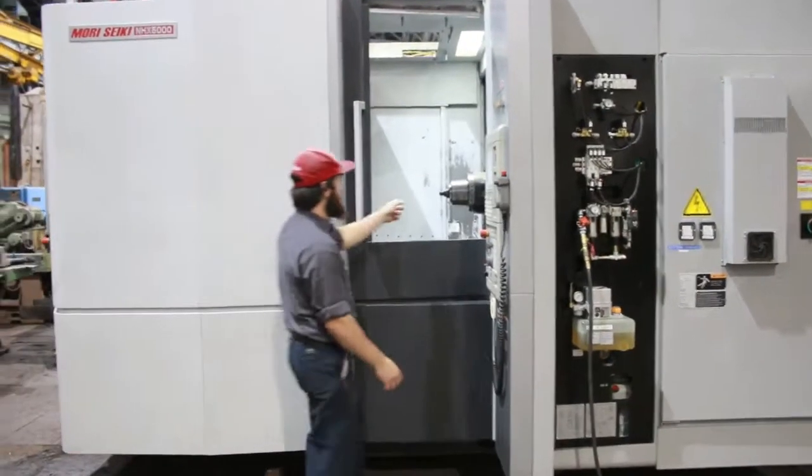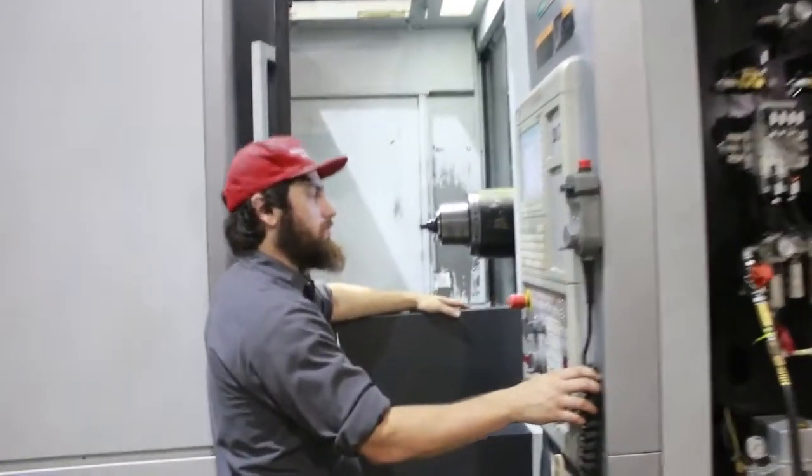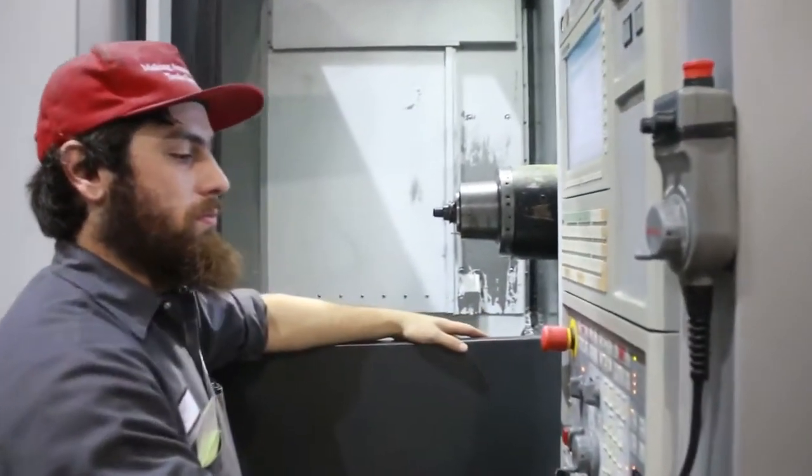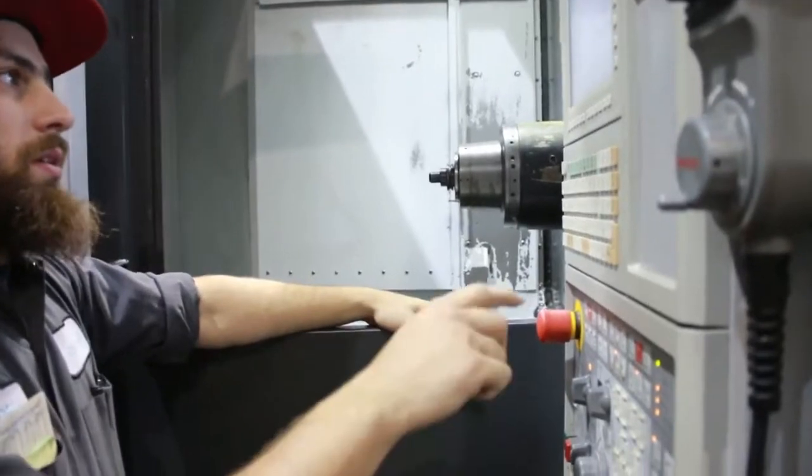Spindle is running right now. It will go up to 12,000 rpm. It's a Cat 40 spindle with a 60 ATC.